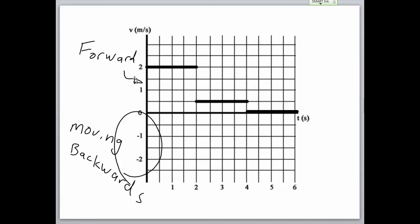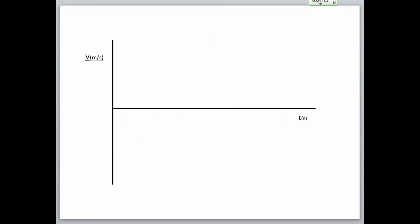In this first velocity graph, the object starts with an initial velocity of 2 meters per second forward, then after 2 seconds, slows down to a half a meter per second. After another 2 seconds, or a total of 4 seconds, the object stops.